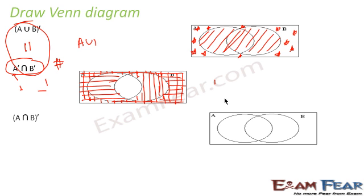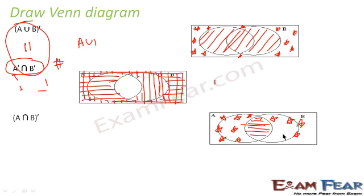Let's take A intersection B complement. First we find A intersection B, which is the common area between A and B. Now to find its complement — anything apart from this common area, marked with a star. So this star area is nothing but (A intersection B) complement: anything outside that common figure.